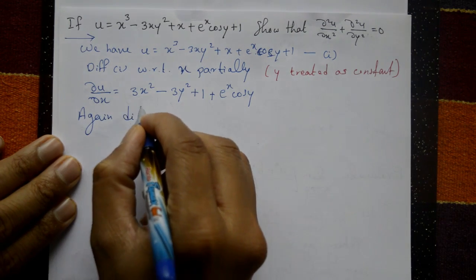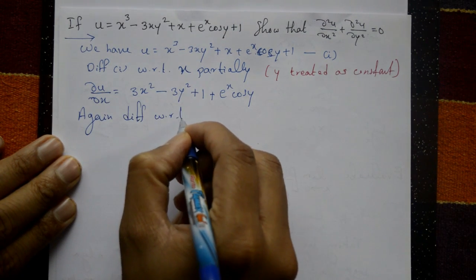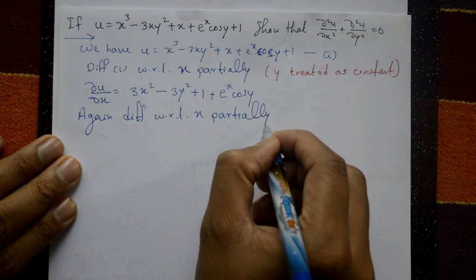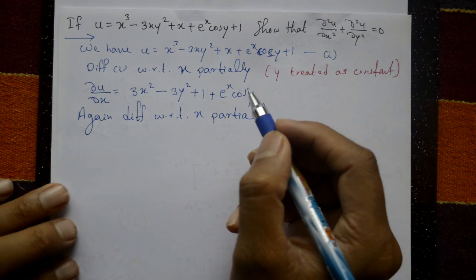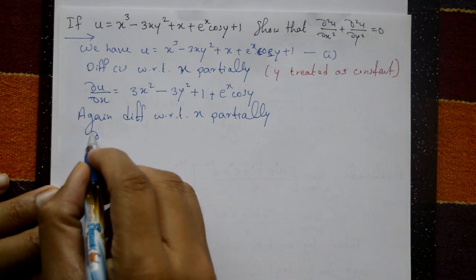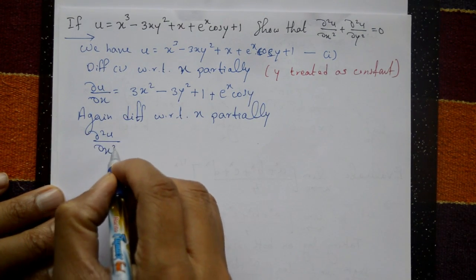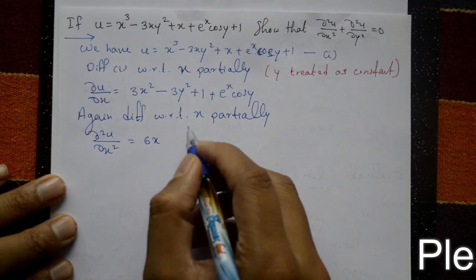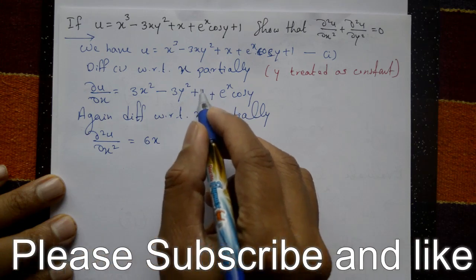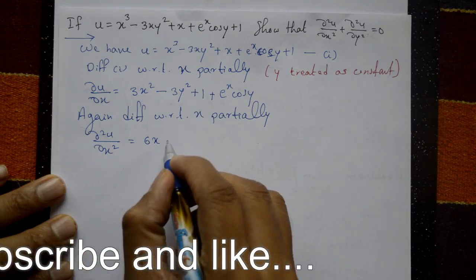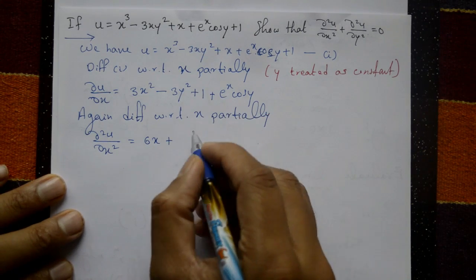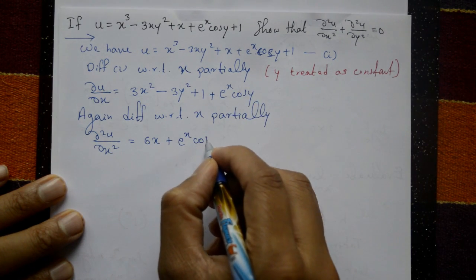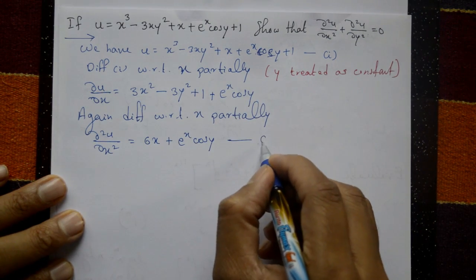This is a partial differential equation. Again differentiate with respect to x partially: ∂²u/∂x² = 6x, the constant terms become 0, plus e raised to x (differentiating eˣ gives eˣ), and cos y remains as a constant. This is equation number 2.